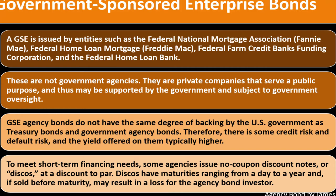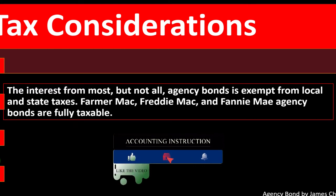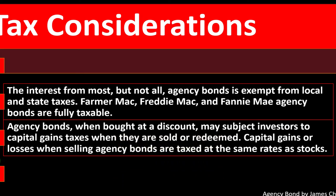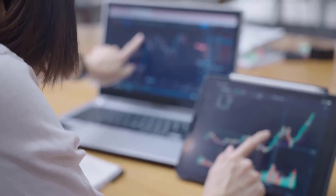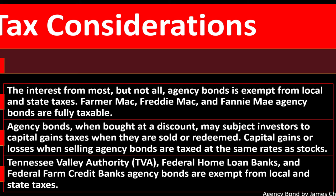For tax considerations: interest from most but not all agency bonds is exempt from local and state taxes. However, Farmer Mac, Freddie Mac, and Fannie Mae agency bonds are fully taxable. Agency bonds bought at a discount may subject investors to capital gains taxes when sold or redeemed. Capital gains or losses when selling agency bonds are taxed at the same rates as stocks. Tennessee Valley Authority (TVA), Federal Home Loan Bank, and Federal Farm Credit Banks agency bonds are exempt from local and state taxes.